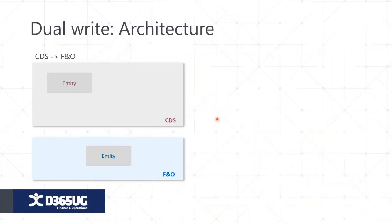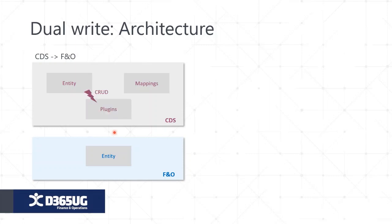Let's quickly jump into the architecture — how the CDS environment works and how dual-write is architected. In the CDS environment, we have a concept of entities, and in FNO we also have a concept of entities. In both environments, if you want the two applications to talk to each other, you have to use entities. In the CDS environment you create entities; in FNO you cannot directly use tables — the reason is that these applications need to work through entities.